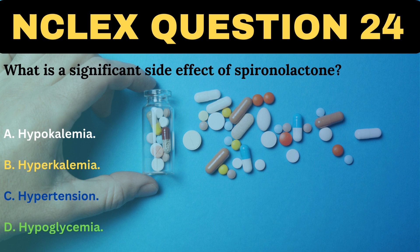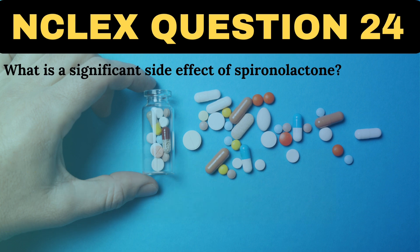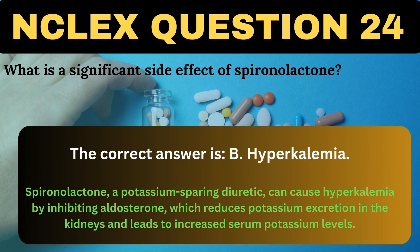What is a significant side effect of spironolactone? A. Hypokalemia. B. Hyperkalemia. C. Hypertension. D. Hypoglycemia. The correct answer is B, Hyperkalemia. Spironolactone, a potassium-sparing diuretic, can cause hyperkalemia by inhibiting aldosterone, which reduces potassium excretion in the kidneys and leads to increased serum potassium levels.